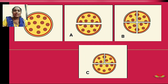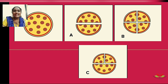Mummy has baked a pizza and she has to divide it among your family members. The family consists of four members: parents, sibling, and you. Mummy has to divide the pizza in such a way that each and every member gets an equal number of shares.